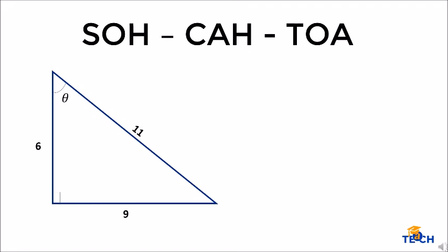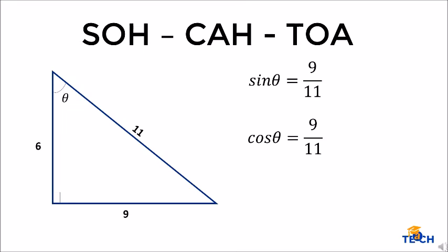For tangent theta, using TOA, opposite over adjacent gives us 6 over 9. Now let's move our angle of interest. For sine theta, opposite over hypotenuse is 9 over 11. For cosine theta, adjacent over hypotenuse is 6 over 11. And for tangent theta, opposite over adjacent is 9 over 6.